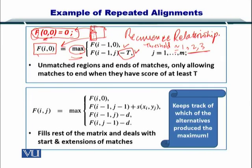Here you see something special, there is a T variable here. This T is the threshold. This can be one or two or three depending on the stringency or strictness that you want to apply in filtering the local alignments. If you have a high threshold then those alignments that will be having only three matches will be ignored, but if you set it to one then only those local alignments will be singled out which have a length of one. Essentially, unmatched regions and ends of matches will be filtered out, only allowing matches to end where they have a score of at least T.